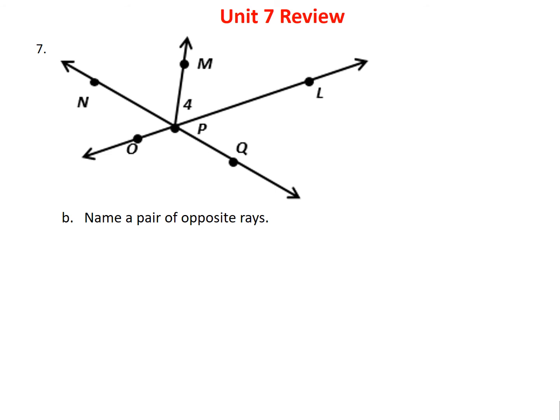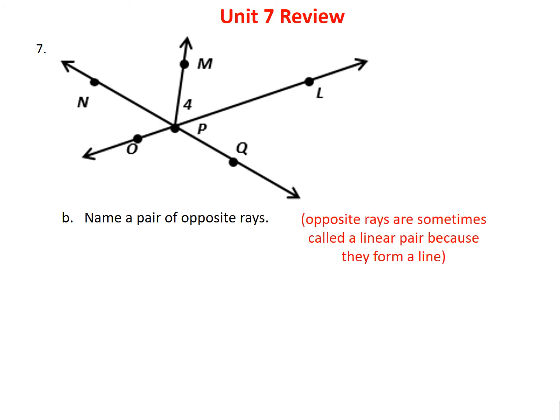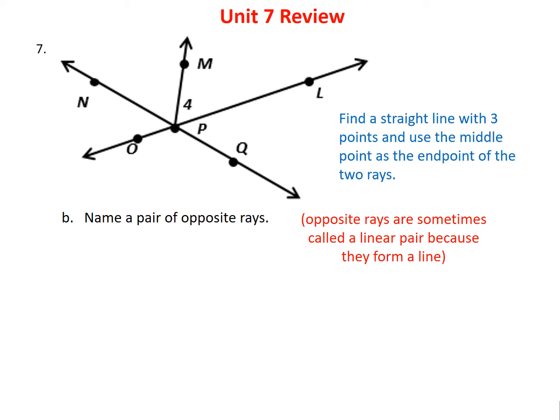Problem 7B: name a pair of opposite rays. Opposite rays have the same vertex but go in opposite directions, forming a straight line — sometimes called a linear pair. Find a straight line with three points and use the middle point as the endpoint of both rays. For example, P is in the middle of one straight line, giving rays PO and PL. Another pair using the blue line: PN and PQ.